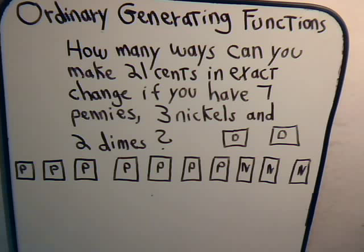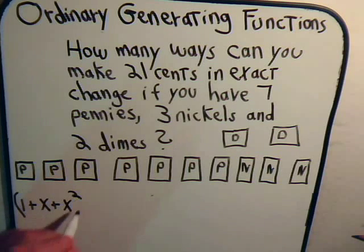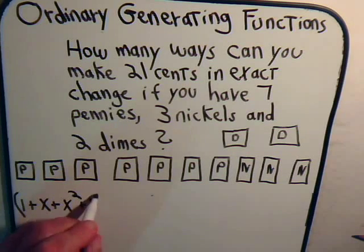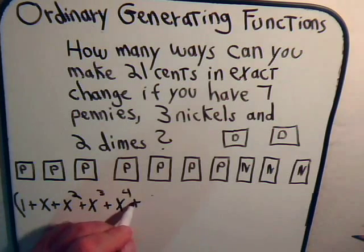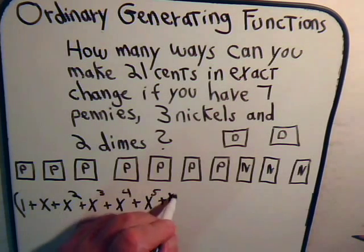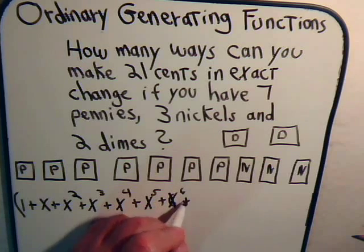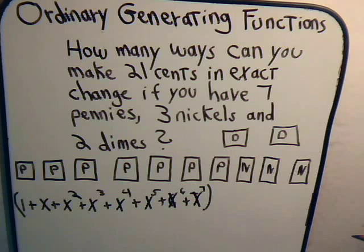For the pennies, we may choose 0 of them when we're making our choice, or we can choose 1, or we can choose 2, or we can choose 3, and we can keep going like this all the way on up to 7. So that's it for the pennies.